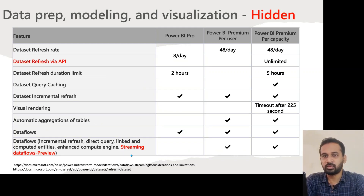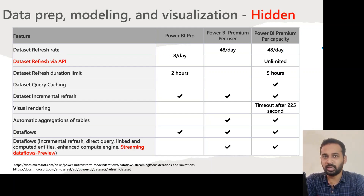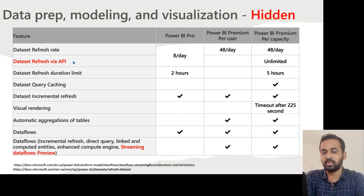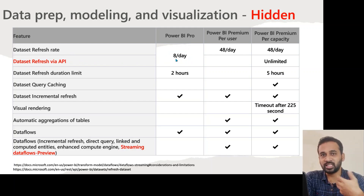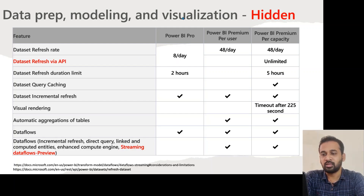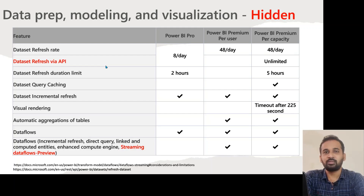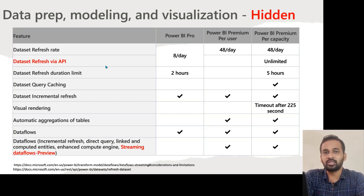Now for hidden features around data refresh: the refresh rate is 8 times a day for Pro and 48 times for PPU and Per Capacity. Dataset refresh via API using PowerShell or TSML is also possible. However, if you have a Pro license, you cannot refresh more than 8 times a day — whether via scheduled refresh or API. For Premium Per Capacity, scheduled refresh is 48 times a day, but refresh via API is unlimited. As per recommendations, if you need a refresh below 15 minutes, it is better to use Direct Query instead of Import mode.